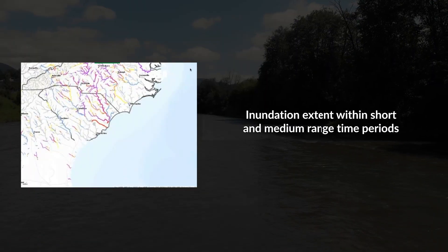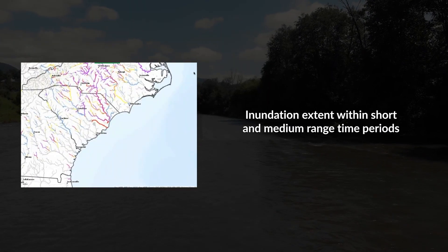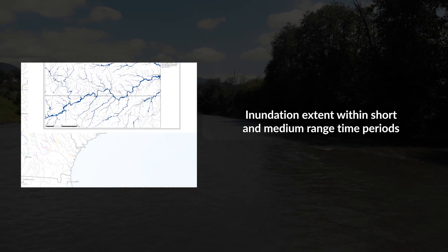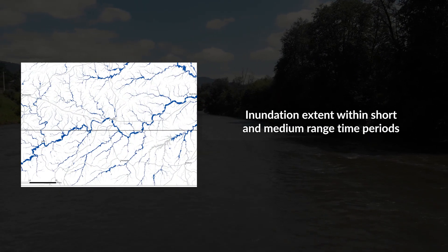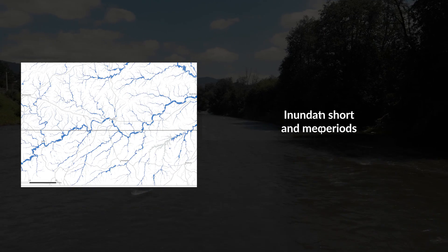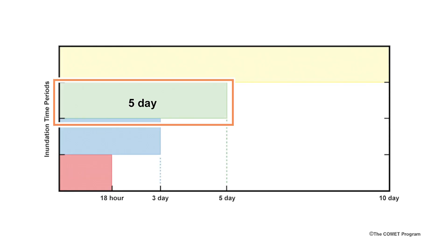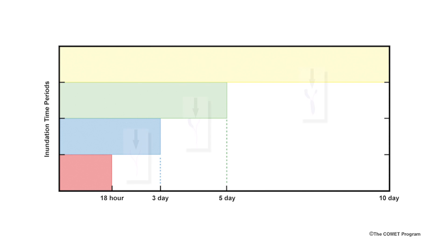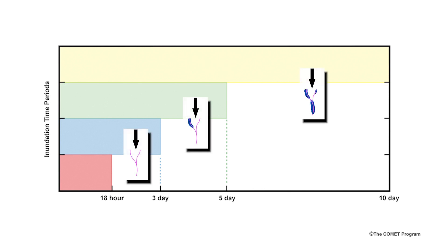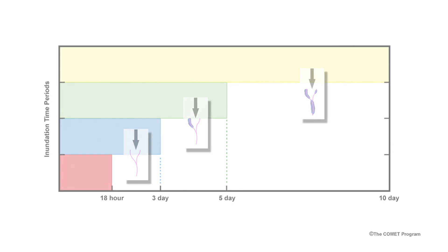And fourth, the NWM FEM provides maximum inundation extent forecast for any reach within the given time period, including 18 hours, 3, 5, or 10 days. Different time periods within the medium range allow the user to identify the changes in the inundation extent with respect to time.